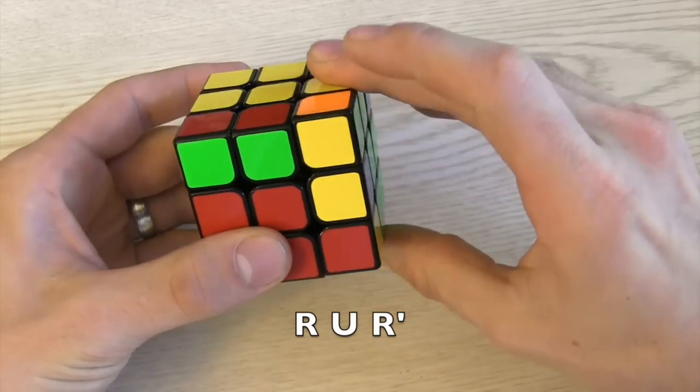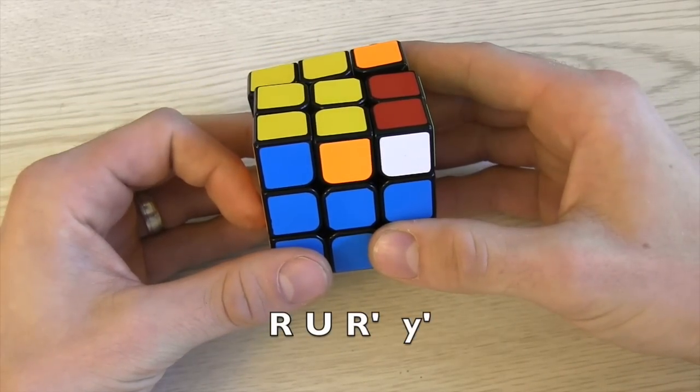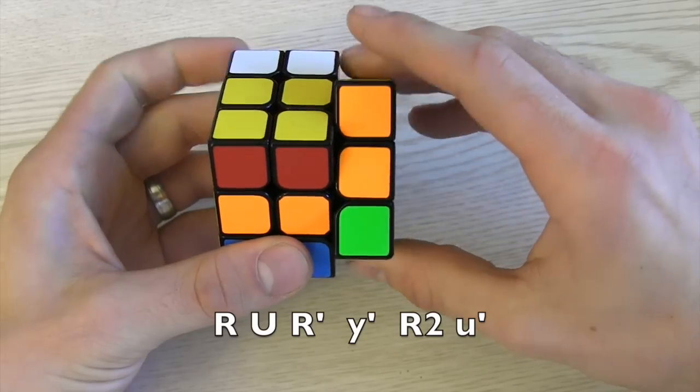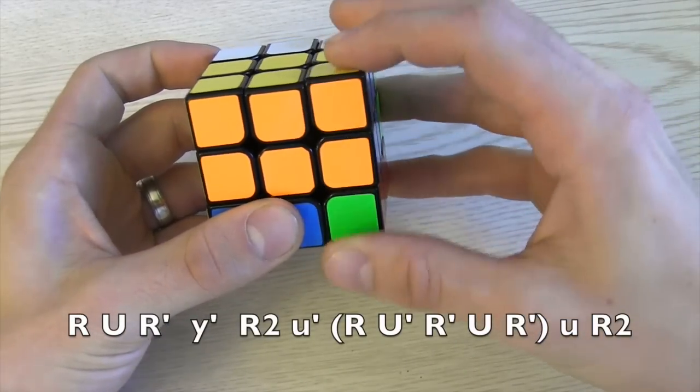First R U R prime. Then you turn to the side the headlights were on a second ago which the notation would be Y prime. Then the last part starts with an R2 and a small U move which moves the top two faces. You do R U prime R prime U R prime small U R2.